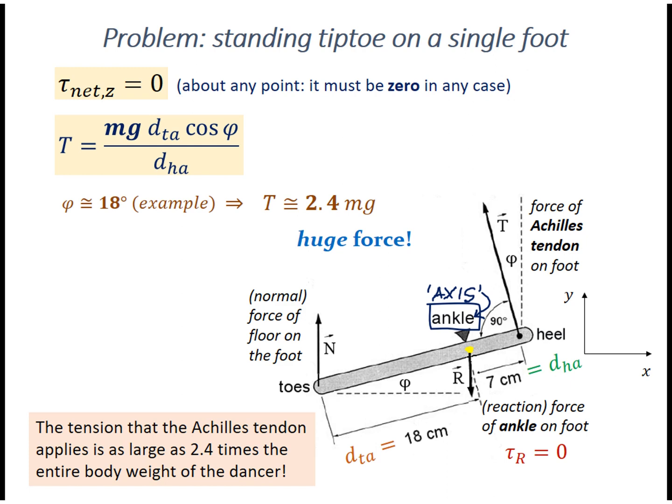For final clarification, we didn't ignore the reaction force of the ankle. We simply chose the axis of rotation to be such that the torque produced by that force would be zero. The magnitude of the force, R, is in fact pretty large. Can you find that?